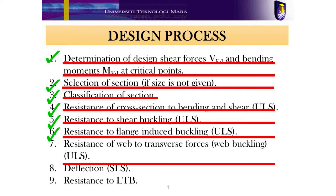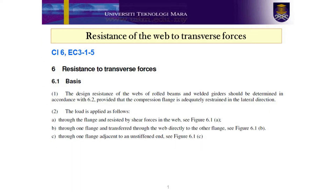This is the final step under the ultimate limit state check. Resistance of the web to transverse forces can be referred to Clause 6, EC3 part 1.5. EC3 part 1.5, Clause 6, distinguishes between two types of forces applied through a flange to the web. The first is forces resisted by shear in the web, referring to load type A and C. The second is forces transferred through the web directly to the other flange, which refers to load type B.